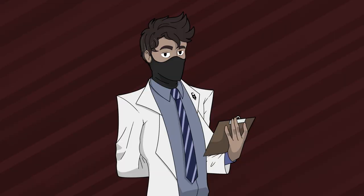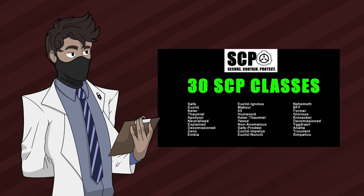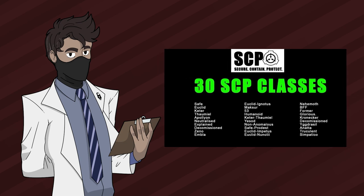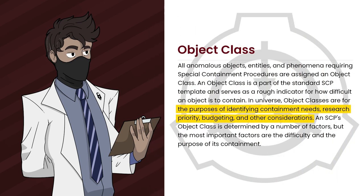If you want to learn more about the other object classes not mentioned here, check out SCP Illustration's video, which I'll be linking above. The SCP Foundation uses the object class for the purposes of identifying containment needs, research priority, budgeting, and other considerations. It's a bit unusual because they don't explicitly define object classes as determining containment difficulty, but rather base it off of these considerations — though containment difficulty is mentioned as an important factor.